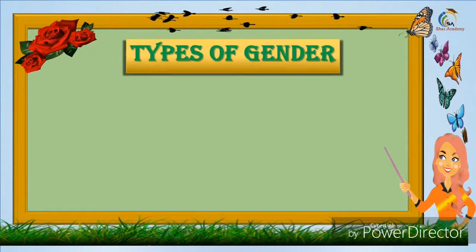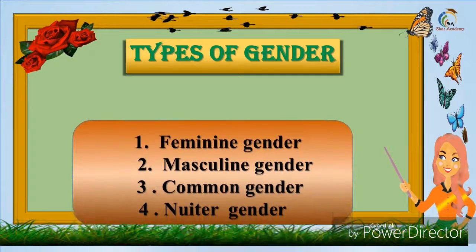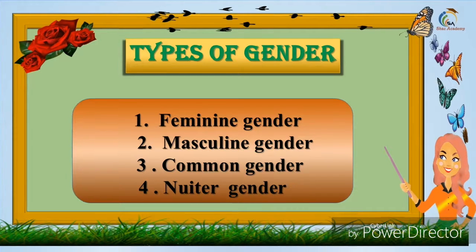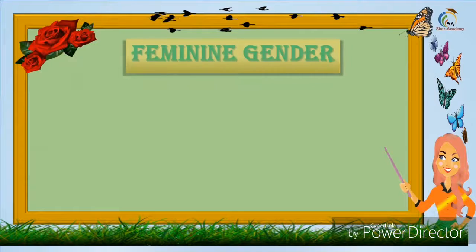Types of gender. There are four types of gender: feminine gender, masculine gender, common gender, and neuter gender.